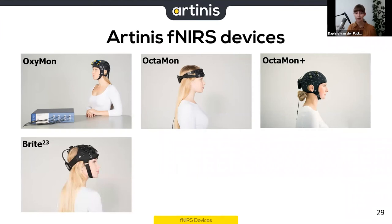The Brite 23 is a wearable 23-channel device especially made for the frontal cortex, again featuring handy optodes that allow you to move hair aside. The sampling rate for this one is 100 Hz.